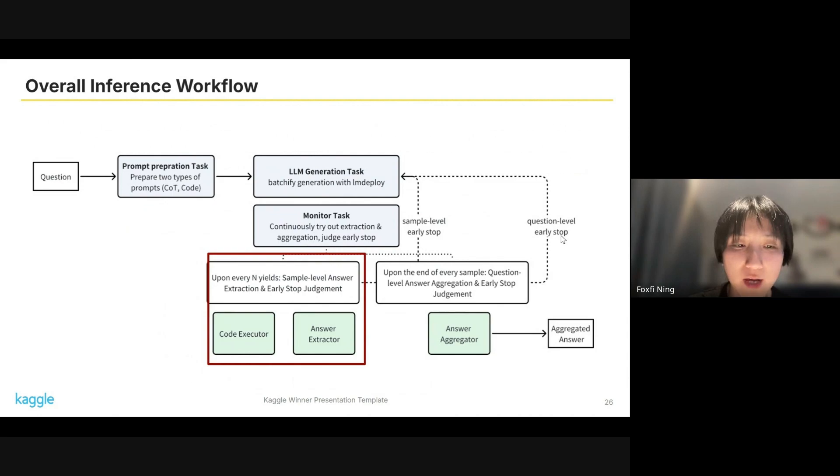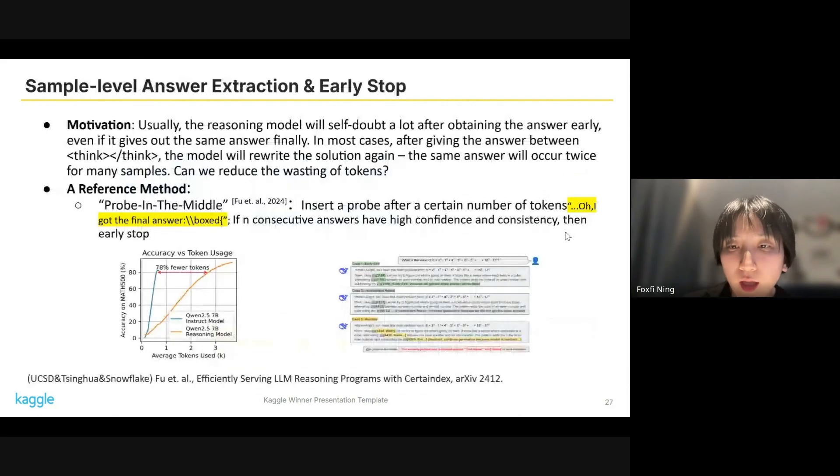Next, I will describe our sample-level early stop strategy. First, we know that the reasoning model will self-doubt a lot after obtaining the answer early. Even it will give out the same answer after a lot of self-doubting, and finally. And in most cases, after giving the answer between the pair of think tokens, the model will rewrite the solution again. This means that for many samples, the same answer will occur twice, at least for many samples. So we can reduce the wasting tokens by early stopping the sample generation.